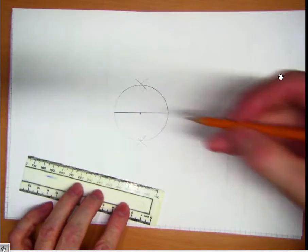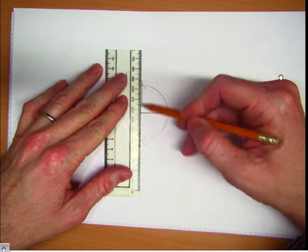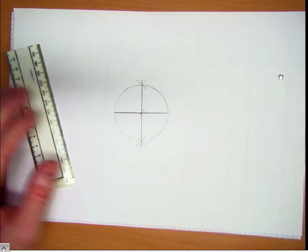So now I'm going to make my perpendicular bisector, and that's the right angle.